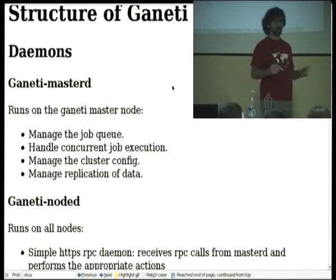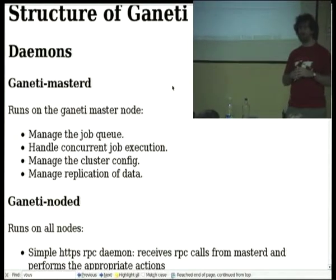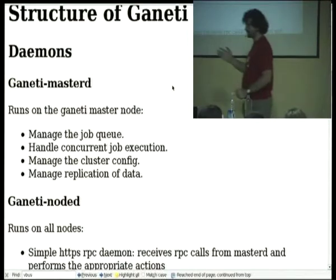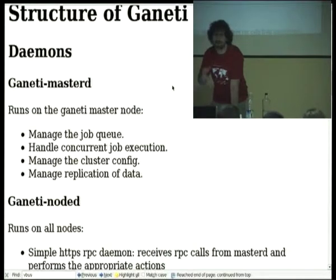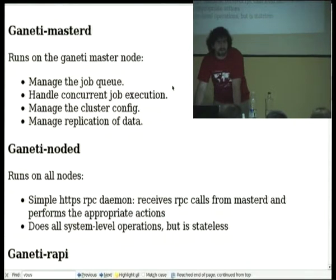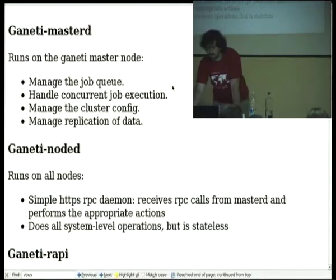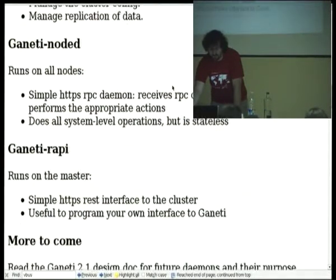There is one cluster config, present on the master. The master has the blessed copy, and it's also copied to a bunch of other nodes to make sure that it's not lost should the master die. Of course, you should back it up. It replicates data to other nodes. There is some data which is replicated to all nodes, and on big clusters all of the data is replicated to a subset of nodes. If you have three nodes, everything is replicated everywhere. But in order to scale, we want to replicate only parts of the data to all nodes to have less traffic.